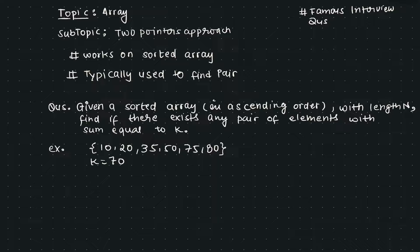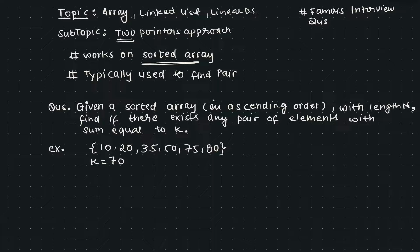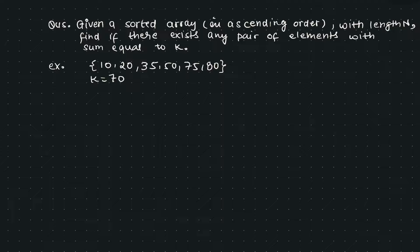Hello, today we will be talking about the two pointers approach. Two pointers approach is not limited to just arrays but it can also be used with linked lists or any other linear data structure. It works on sorted arrays, so that is a precondition to use the two pointers approach, and it is usually used to find a pair out of an array. It is one of the most famous interview questions being asked continuously in many companies.